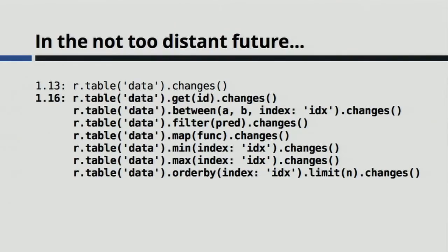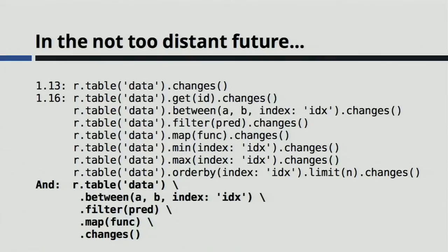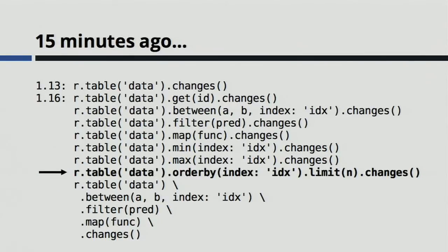In the upcoming 1.16 release, you can call changes on all these classes of queries: changes on individual points with get, changes on a range, changes on transformations of a table including filters and maps, and changes on the first n elements of an ordered stream including the special case of min and max. You can also subscribe to changes on combinations of these primitives, with a few small exceptions. Each individual one of these is a feature somebody wants to add to their app that they can now just do without wasting a chunk of their life banging their head against the wall dealing with concurrency bugs.